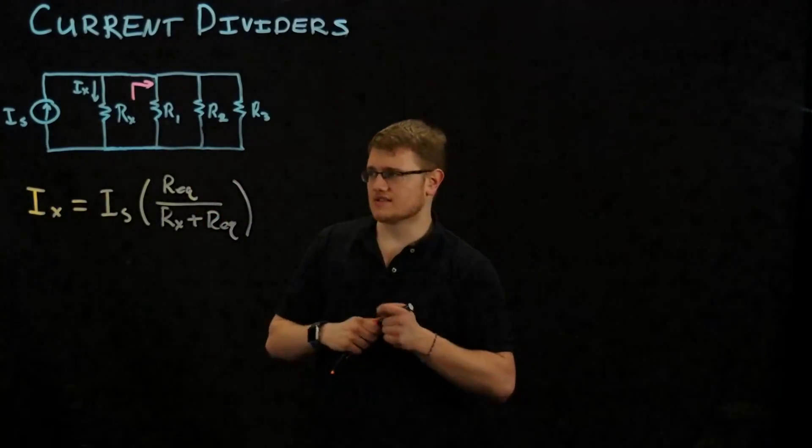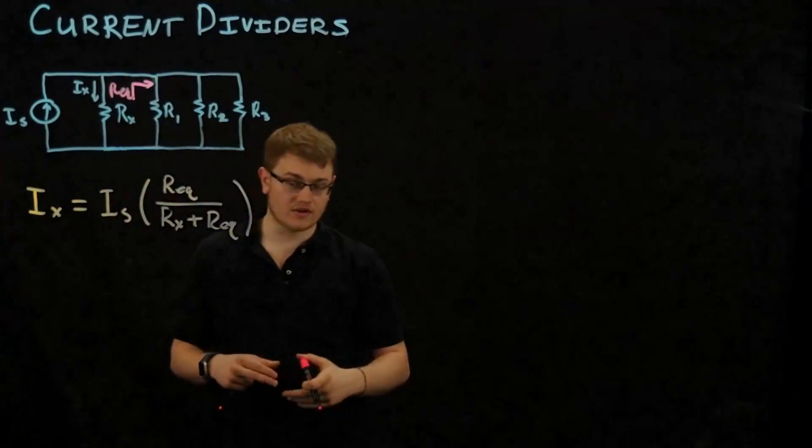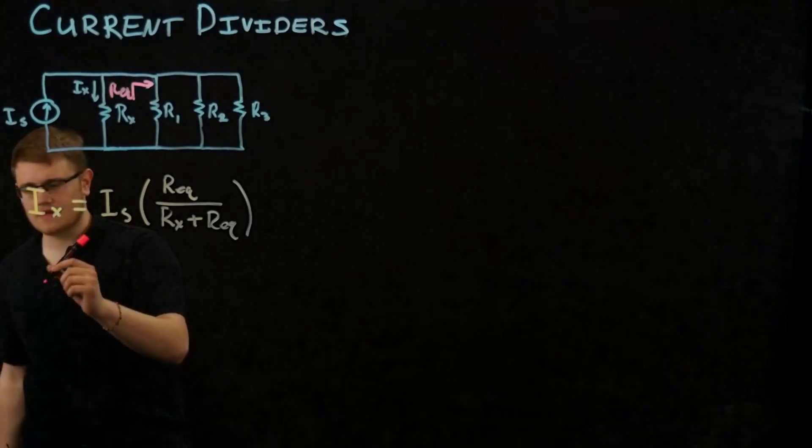So what do we do with resistors in parallel? Find their equivalent resistance, which is why we called it Req, or R equivalent. So how do we do that?